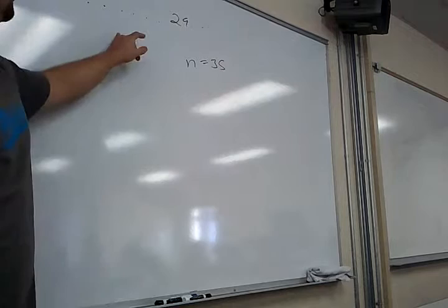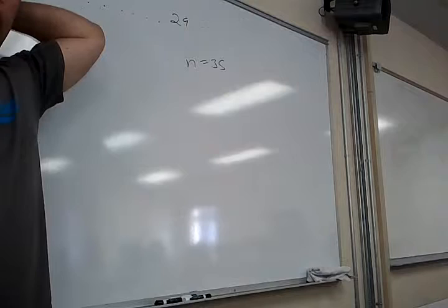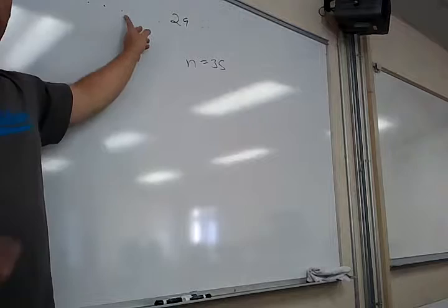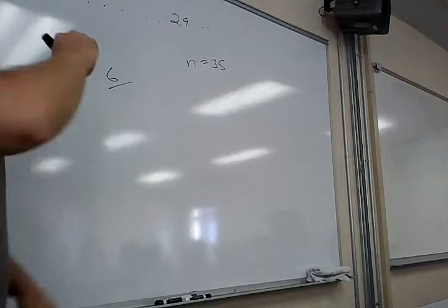So to find the percentile — the percentile is the percentage of the data that's below your data value. So what percentage of the data is below 29? There's six data values, but what percentage of the data is that? Six data values out of 35.